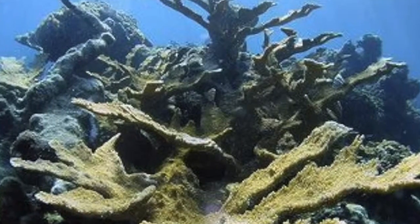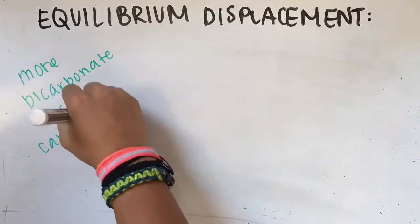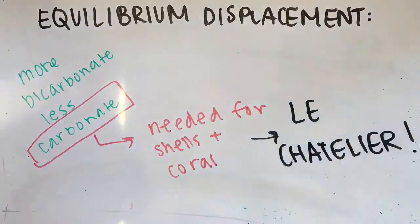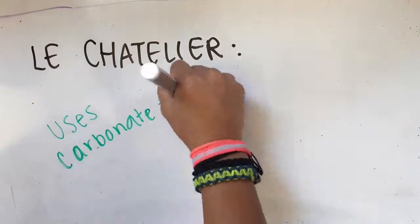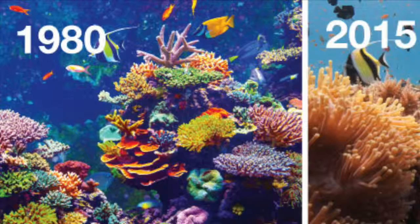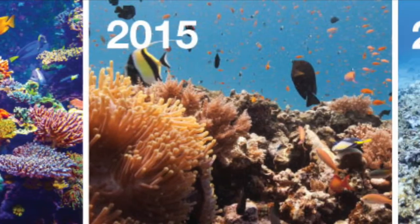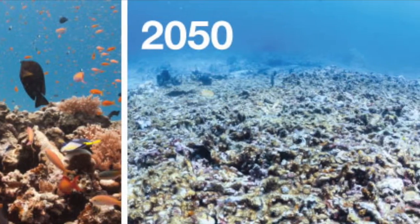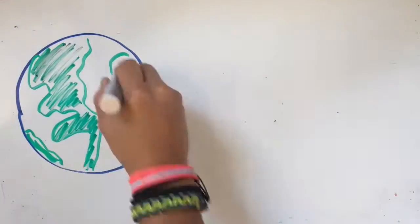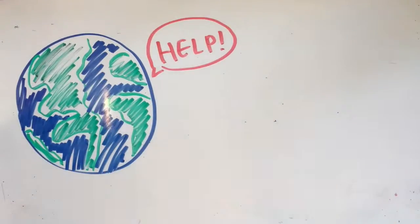This is resulting in the bleaching of shells and coral. The carbonate from the shells and coral is being removed to restore the displaced equilibrium because of Le Chatelier's principle. Ocean acidification is a huge growing issue affecting our world. Changes must be made in the near future to preserve what is left of our oceans.